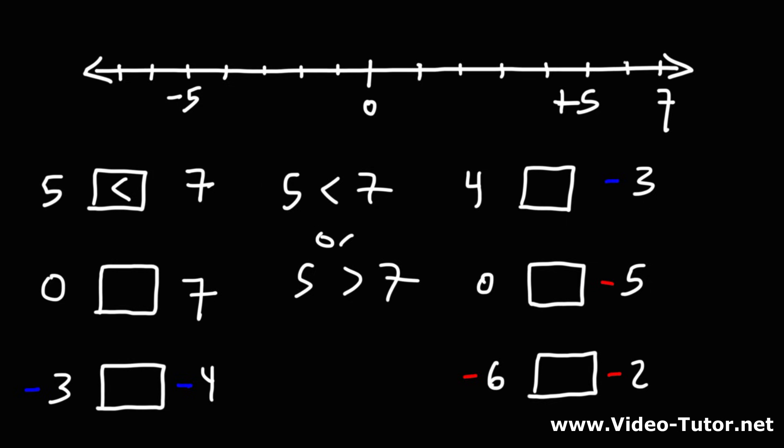You can read this as, from left to right, 5 is less than 7. Or from right to left, 7 is greater than 5.